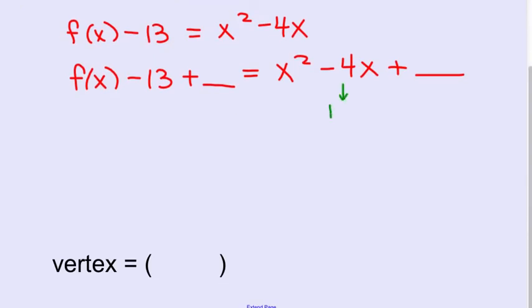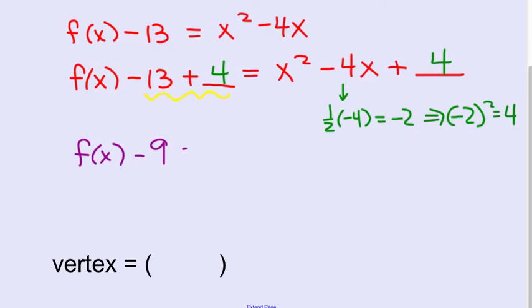Half of negative 4 is negative 2. Then we square it and we get 4. So we're going to add 4 here. We're going to add 4 there. Balance it out. So I'm going to add these two numbers together. Negative 13 plus 4 is negative 9.